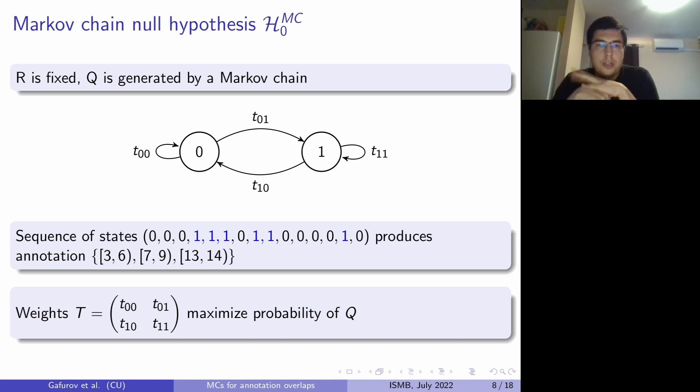So let's get to the formulation of the hypothesis. So in our Markov chain null hypothesis the reference is fixed as before and query annotation is generated by Markov chain. So this is the Markov chain that has two states 0 and 1. 0 represents outside of the interval, 1 represents inside the interval. And then we just generate L states and contiguous segments of 1s represents the individual intervals as you can see in the example.